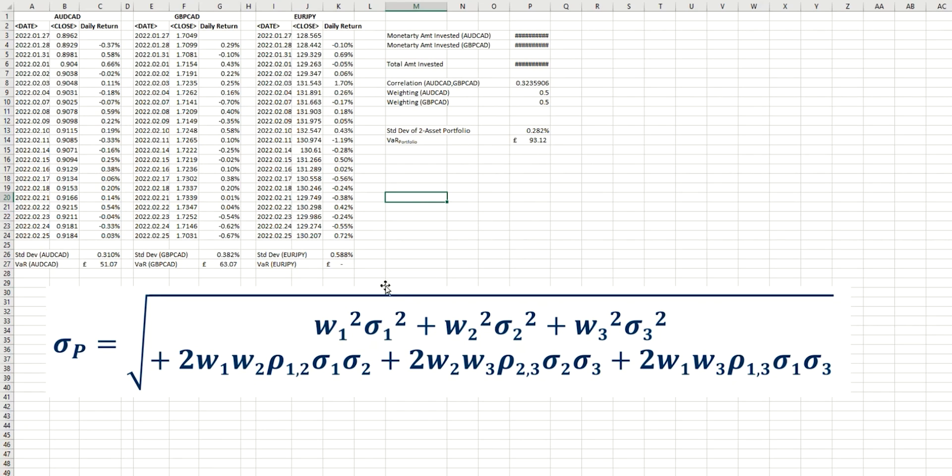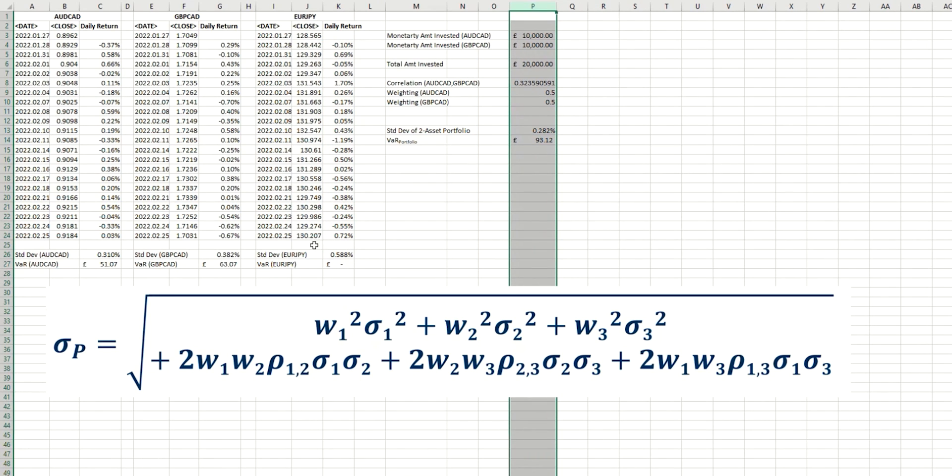So if I just change the terminology here to Euro Yen, and the same for the value at risk. Now, you'll notice that the standard deviation of returns has been calculated on those daily returns that we see here. But the value at risk is coming through as zero. And the reason for that is because we haven't yet given a monetary value to this amount. So I'm just going to change this to cell P5.